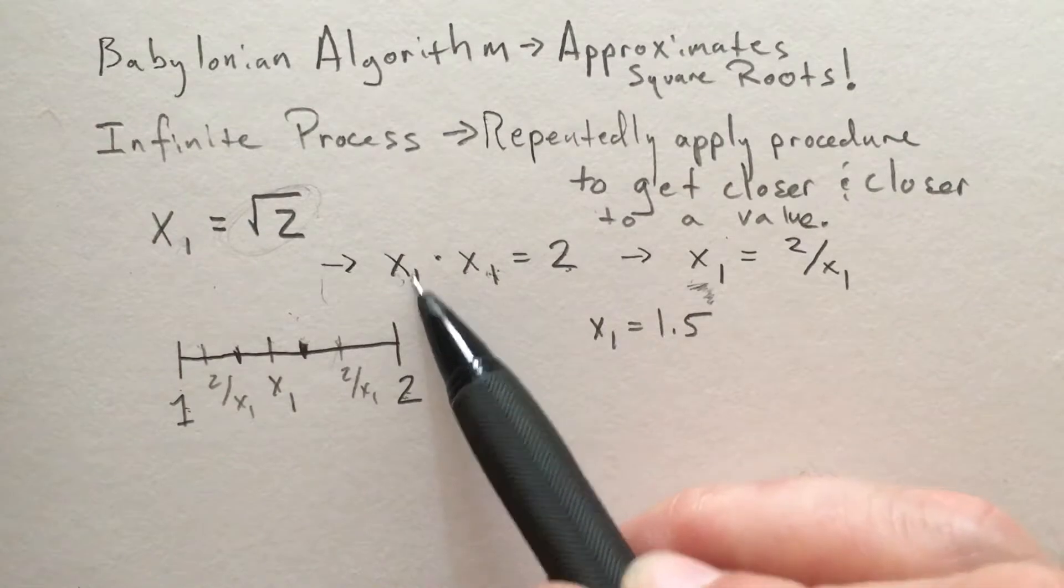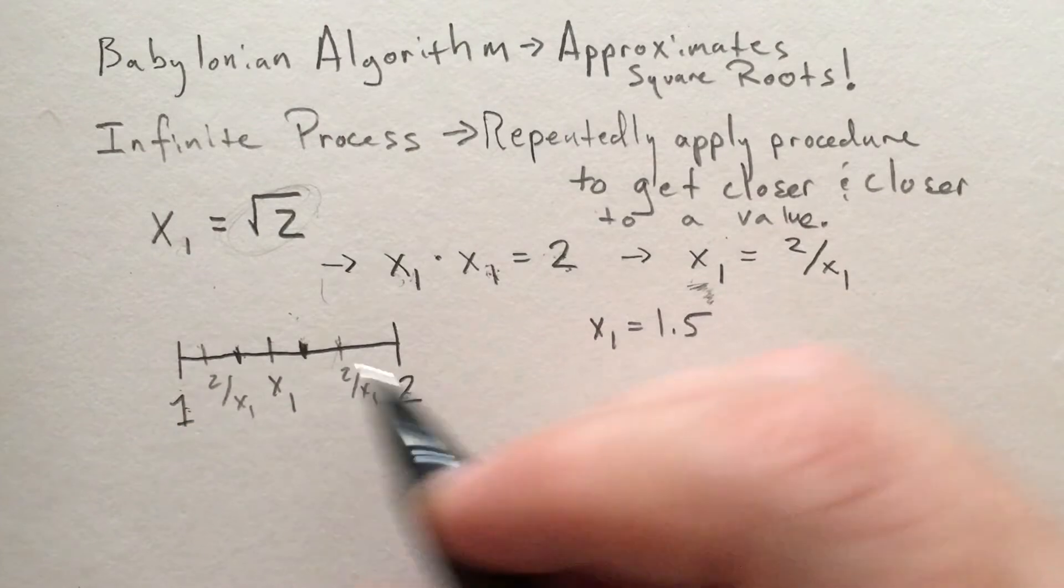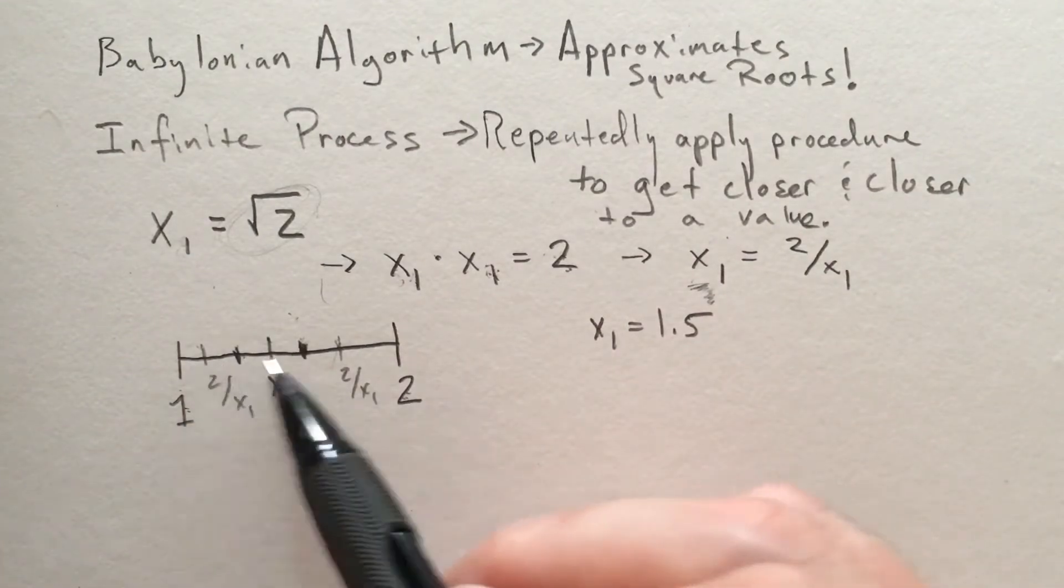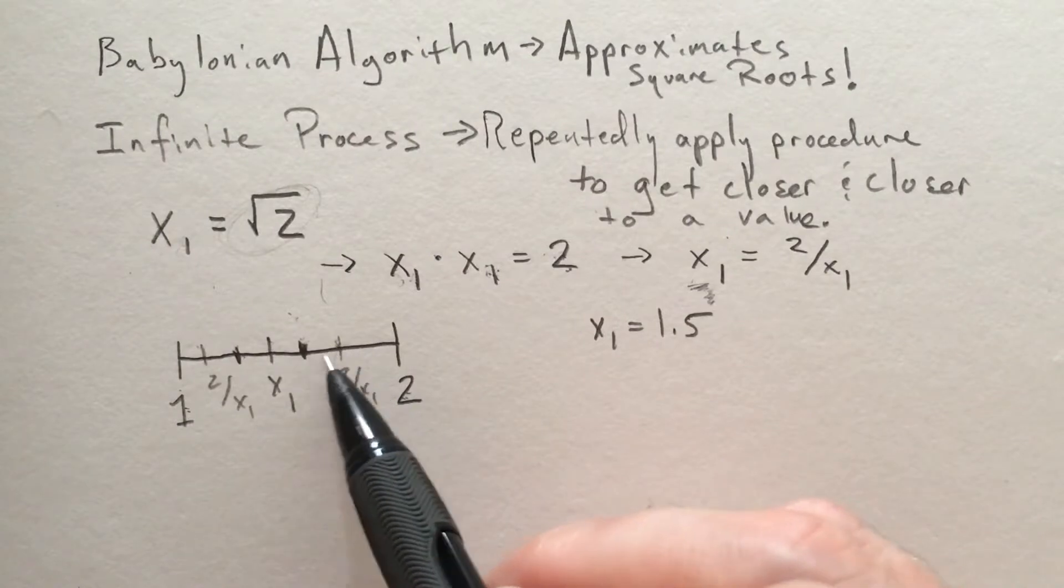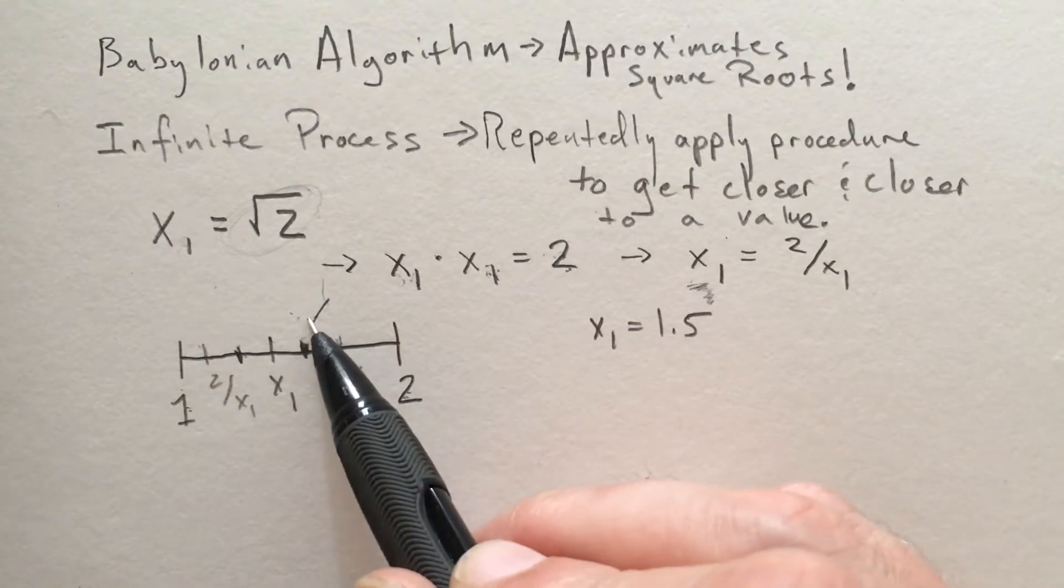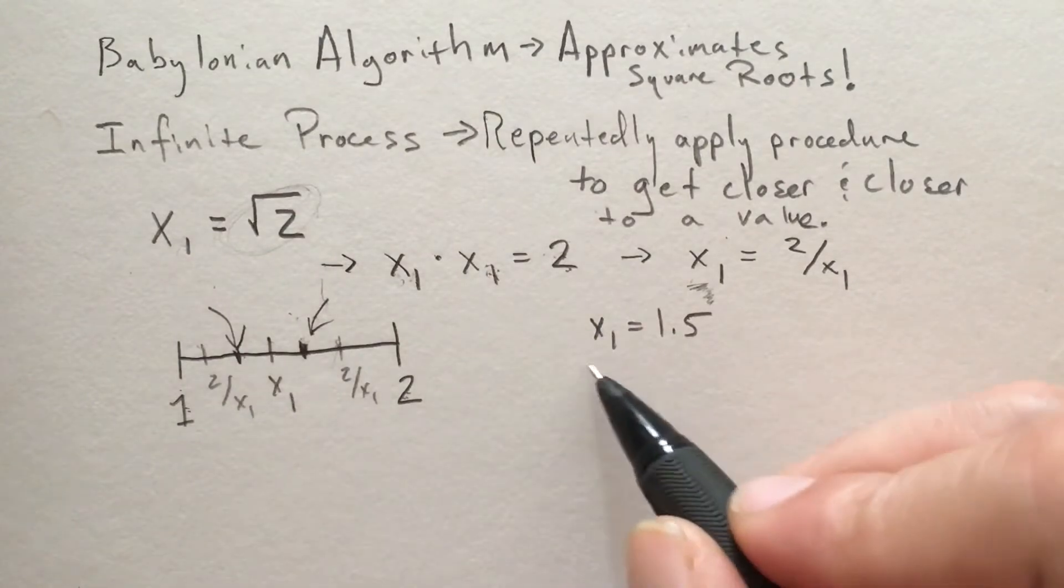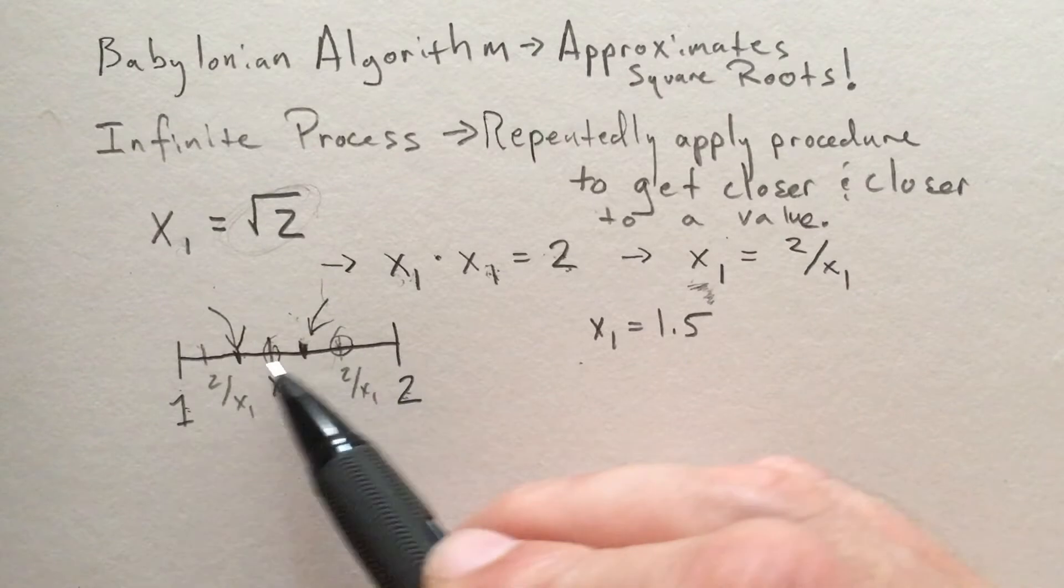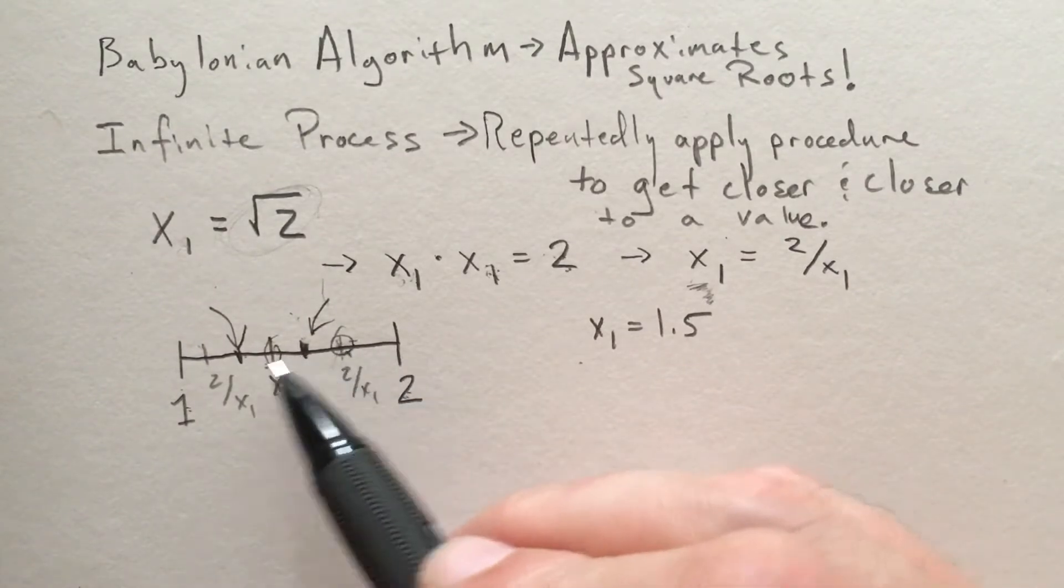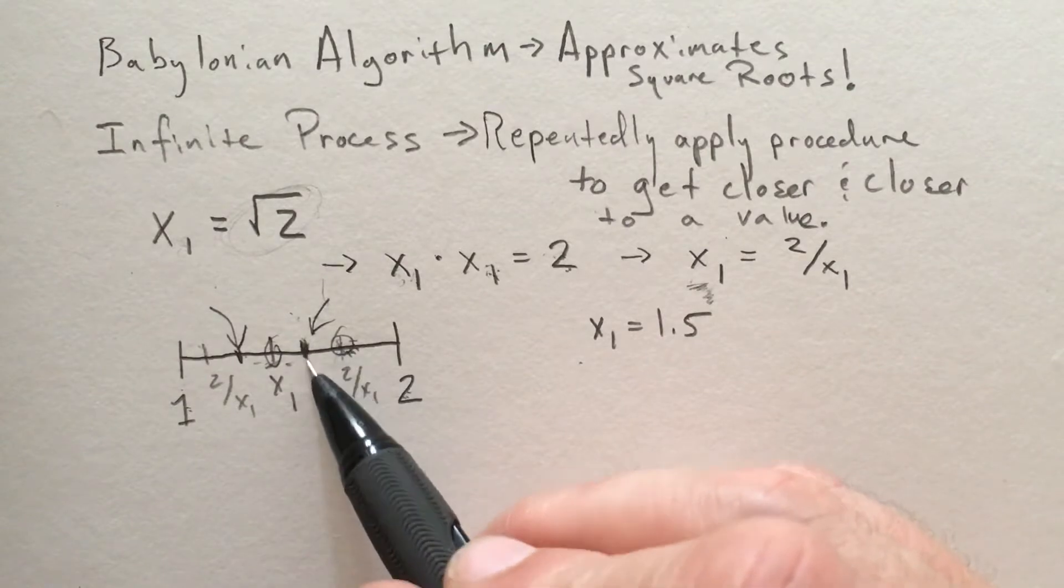So we know that we've bounded the actual root—we've trapped it in between, whichever the case may be. We don't have the actual value; we know we're outside the value on either side. So what should we do? Cut it in half instead and use this as our next approximation.